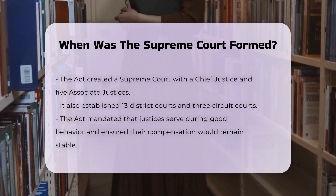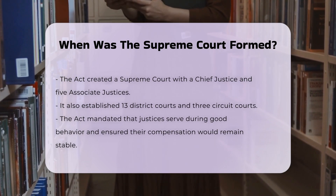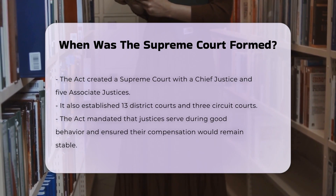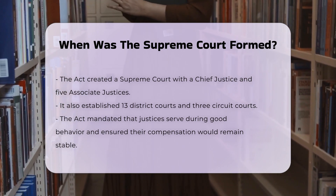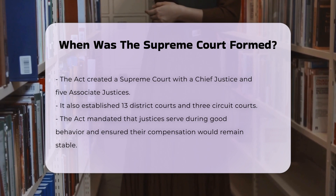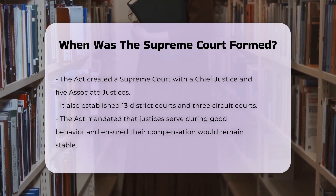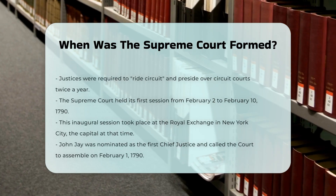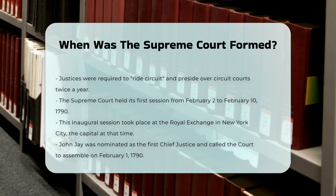The Judiciary Act of 1789 was crucial in defining the structure and operations of the Supreme Court. It mandated that the justices would hold their offices during good behavior and receive compensation that would not be diminished during their tenure. The act also required justices to ride circuit, presiding over circuit courts twice a year in their assigned judicial districts.